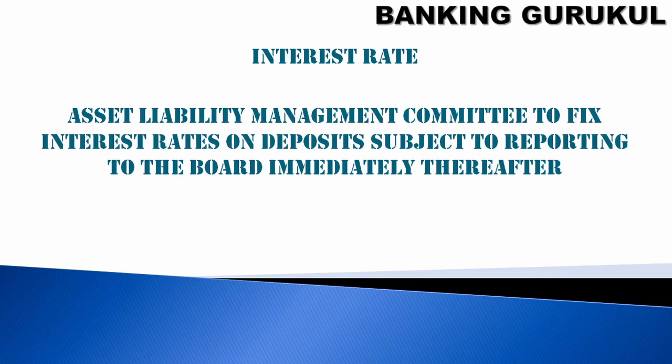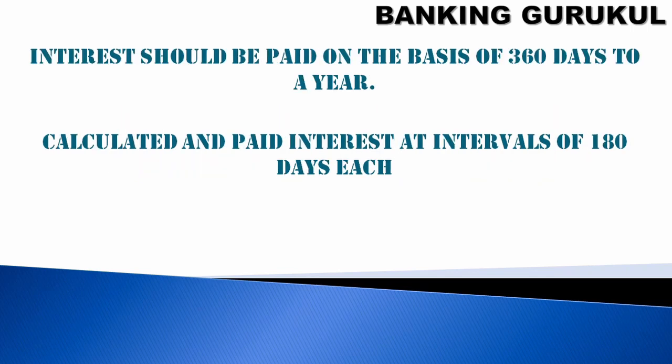The Asset Liability Management Committee (ALCO) fixes the interest rates on FCNR deposits, subject to reporting to the board of directors immediately thereafter. Interest should be paid on the basis of 360 days to a year — unlike normal deposits which use 365 or 366 days for leap years. FCNR deposits are always calculated on a 360-day year.